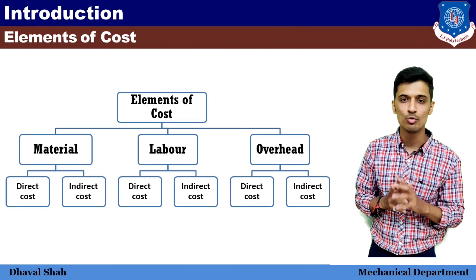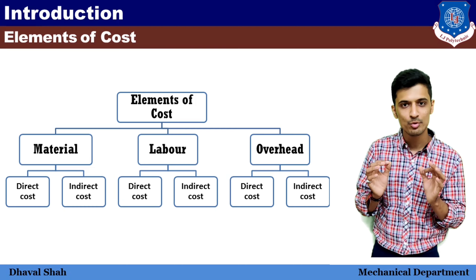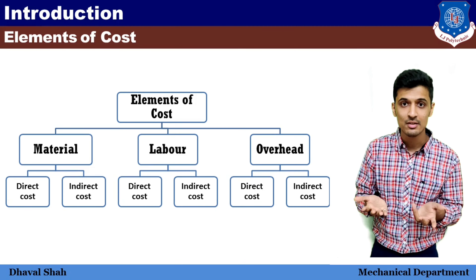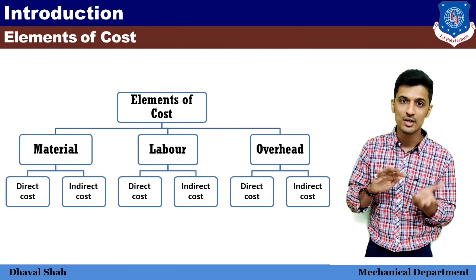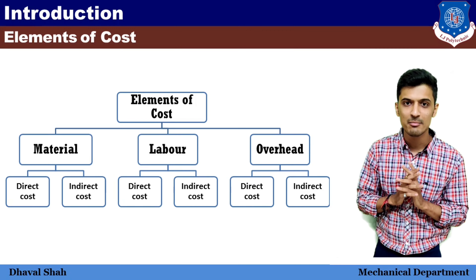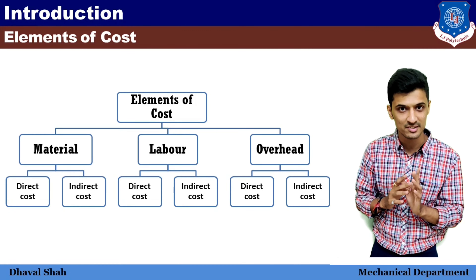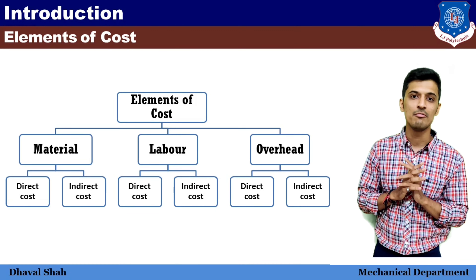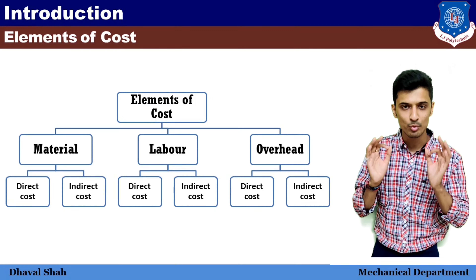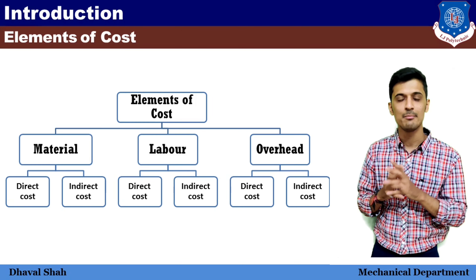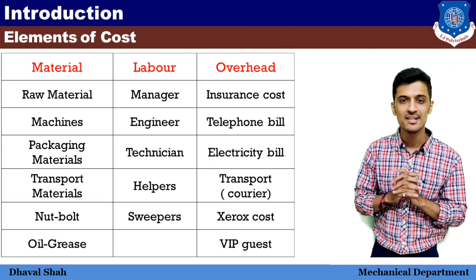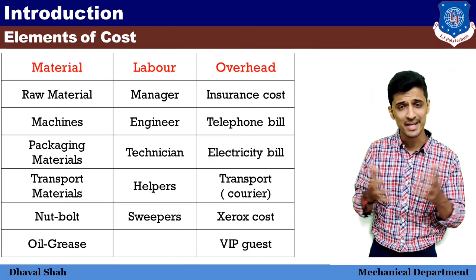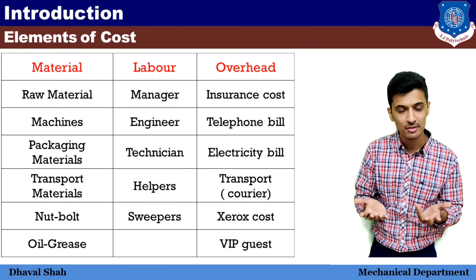Indirect cost ka matlab kya hai — agar woh cost badh jaaye toh humari product ki rate mein kuch fark nahi padega. Matlab kai cheezein aisi hoti hain jinka costing bahut kam hota hai. For example, ek nut lete hain toh nut ek ya do rupay ka aata hai. Toh ek ya do rupay mein humari product mein utna fark nahi padega if we are selling a product of thousand ya two thousand rupees. Jabki direct material mein agar hamare product ka 200 ya 300 rupay ka fark pad jaaye, toh definitely it will affect the cost of our product.